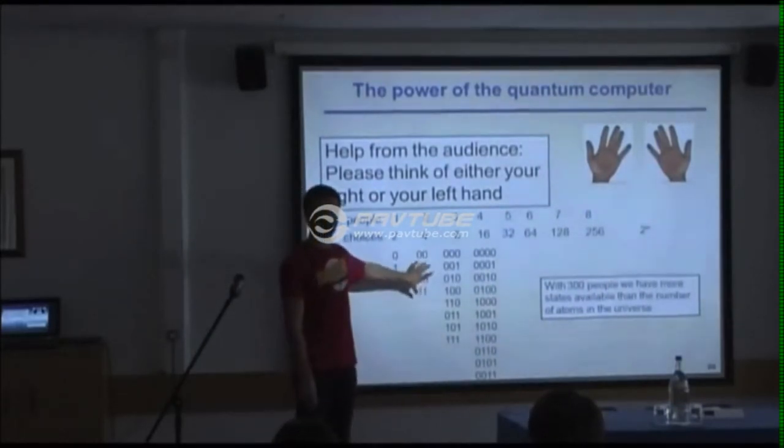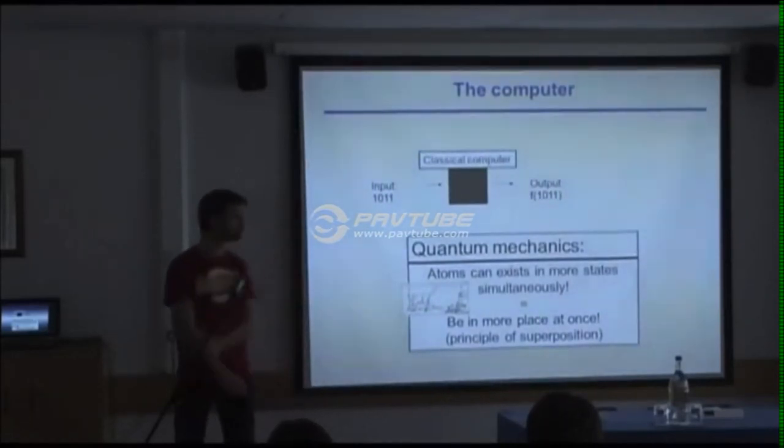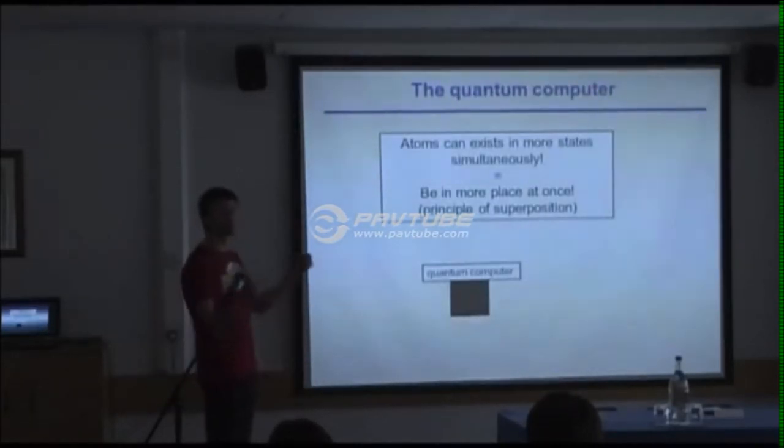And I think that's the power of the quantum computer. A quantum system that we have can exist in two sites and different states at once, which means if we have a two-level system like the qubit, then it can be in both the zero and the one at the same time.